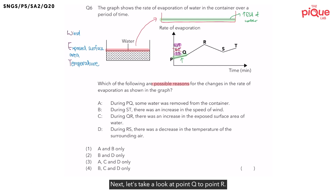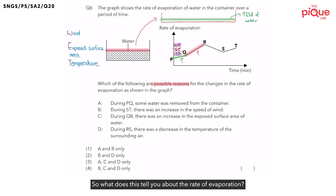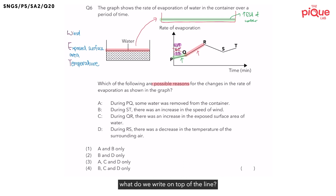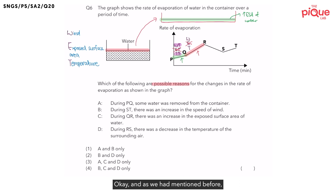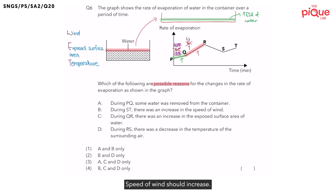Next, let's take a look at point Q to point R. Did the line increase or decrease? The line increased, so the rate of evaporation increased. We write down the factors WET on top of the line and cancel out exposed surface area. To increase the rate of evaporation, speed of wind should increase and temperature should increase as well.